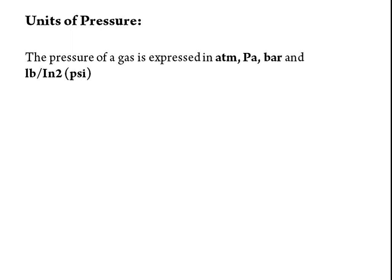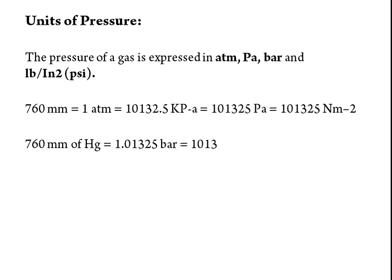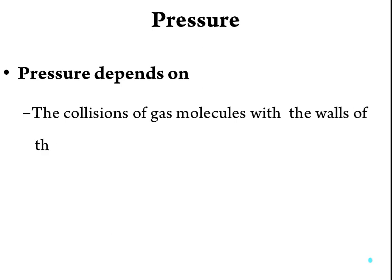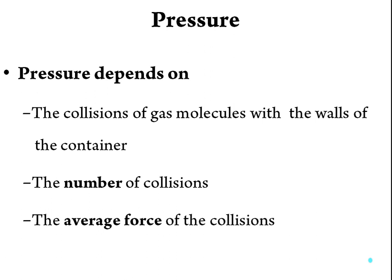The units of pressure: gas pressure is expressed in atmospheric pressure or Pascal. 760 mmHg equals 1 atmospheric pressure, which equals 101.325 kPa. The pressure of a gas depends on the collision of gas molecules with the wall of the container, the number of collisions, and the average force of those collisions — all responsible for creating pressure inside the container.